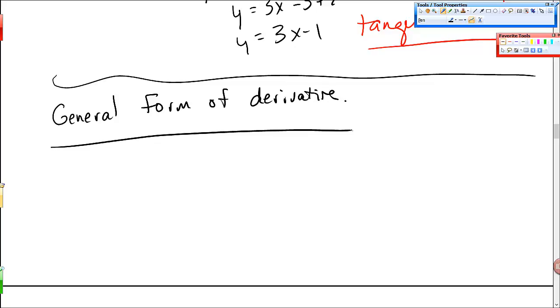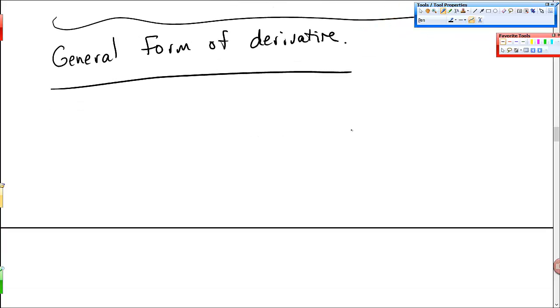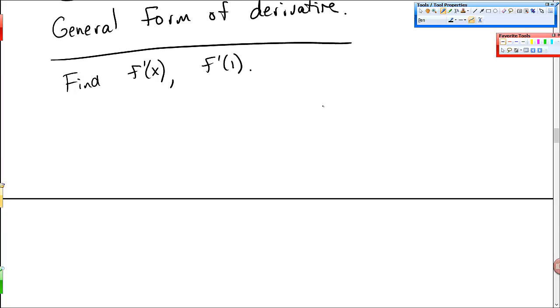When I go, there's usually - your book will use the phrase four-step process. I will use this: find the limit definition. And so it asks you to find f prime of x, and sometimes asks you to find f prime at a number. So let's do this example. Let me give you a different one. Let's do f of x is equal to 3x minus 7.